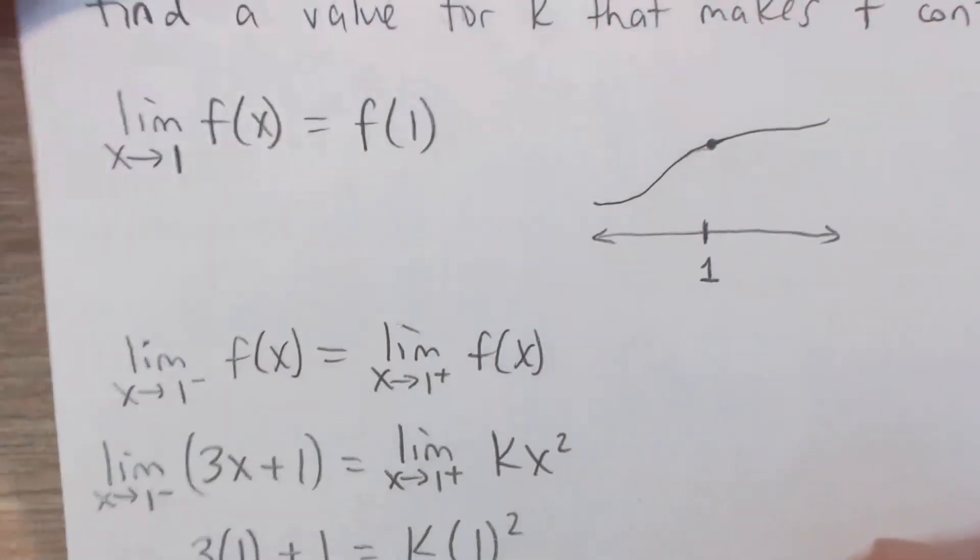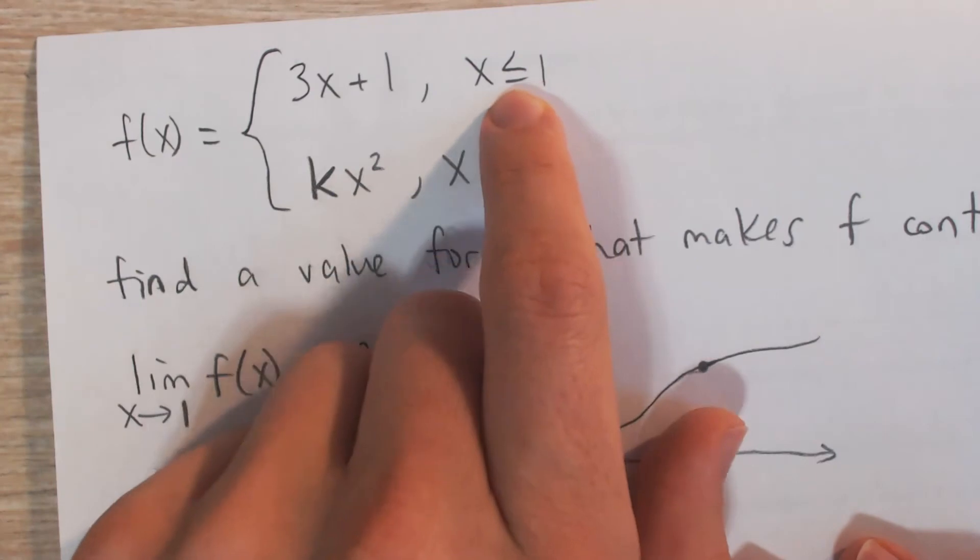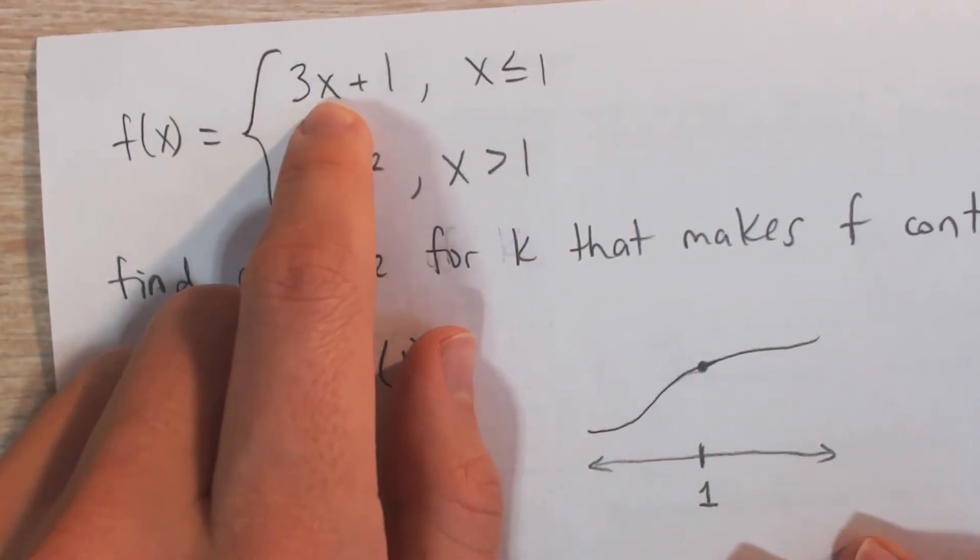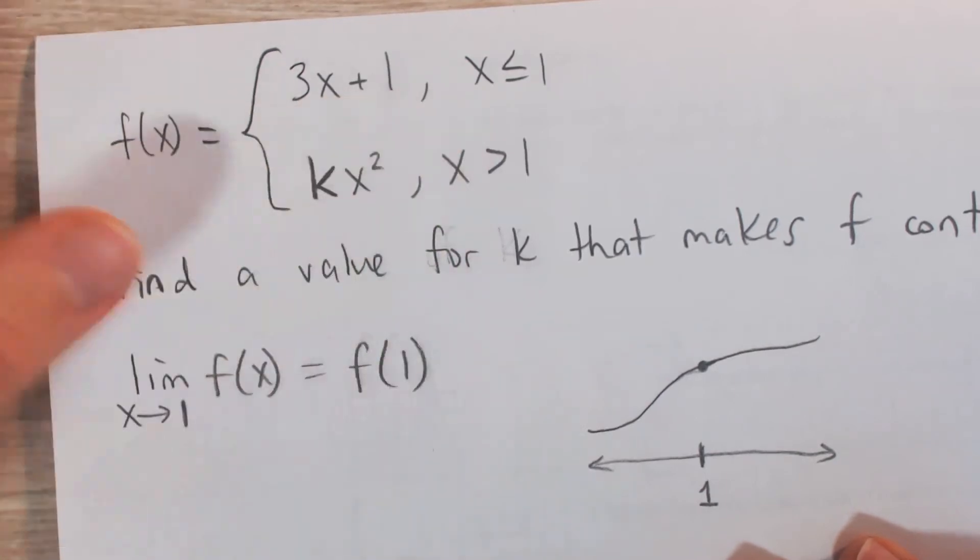Well, f of 1 is just plugging in 1, and because it's less than or equal to 1, we use this rule, and again, we just plug in 1 for x, and we get 3 times 1 plus 1, that's 4.